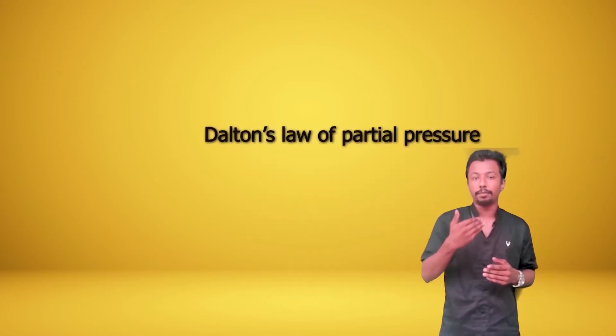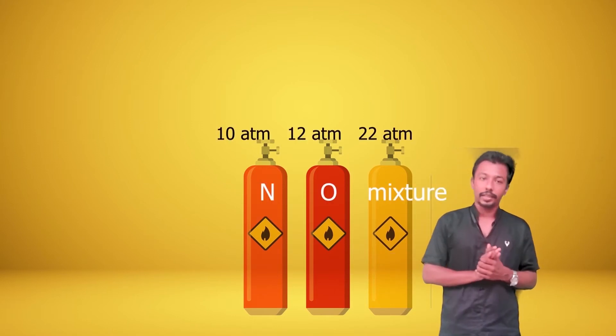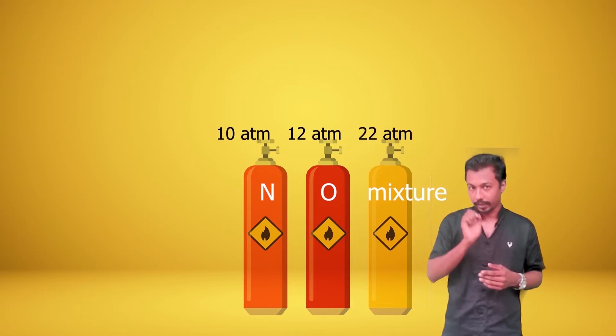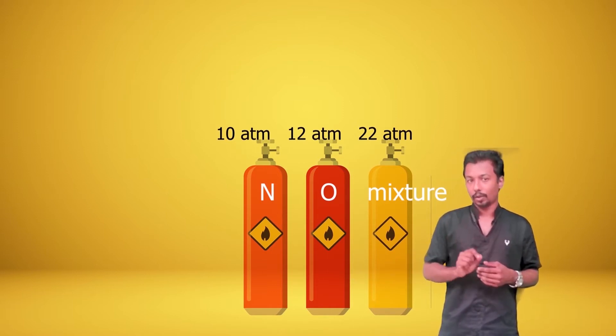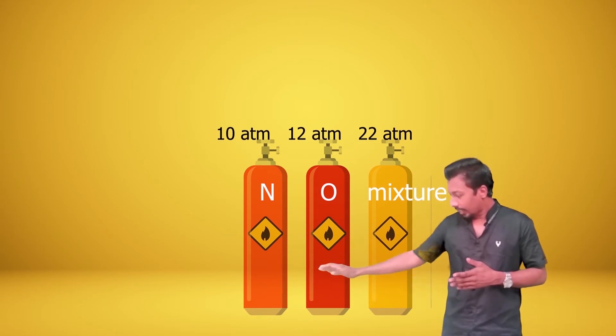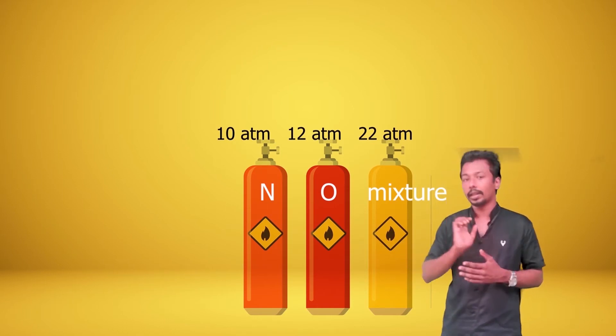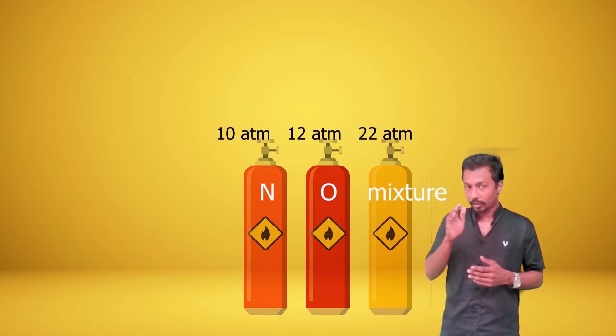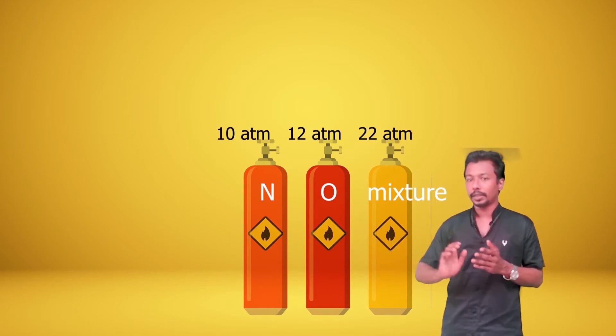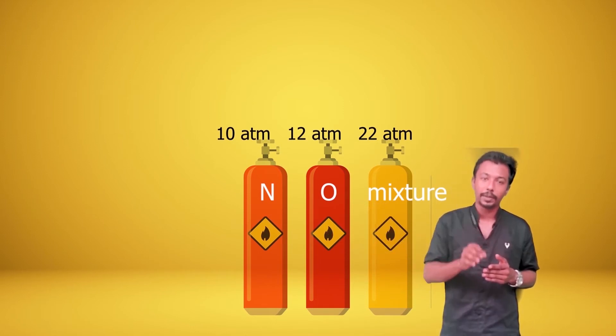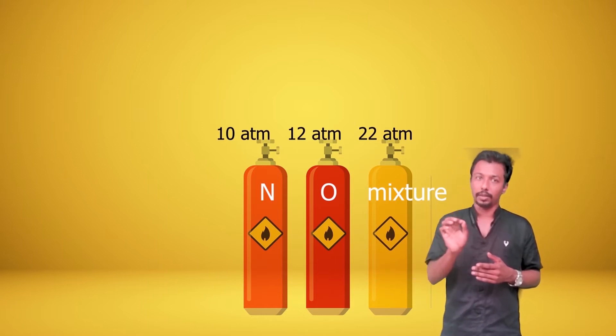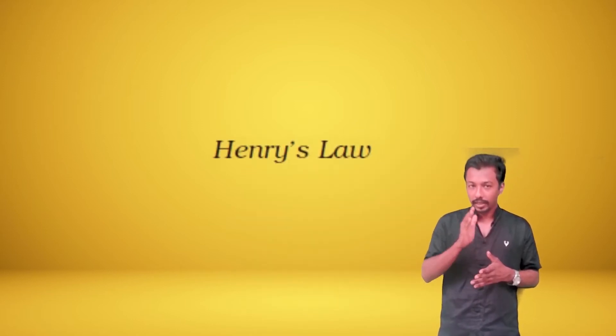In the previous class, we memorized Dalton's Law of Partial Pressure. For example, if nitrogen is at 10 atmospheric pressure, oxygen is at 10 atmospheric pressure, and another gas is at 12 atmospheric pressure, we call these P1, P2, etc. — these are the partial pressures of each component.